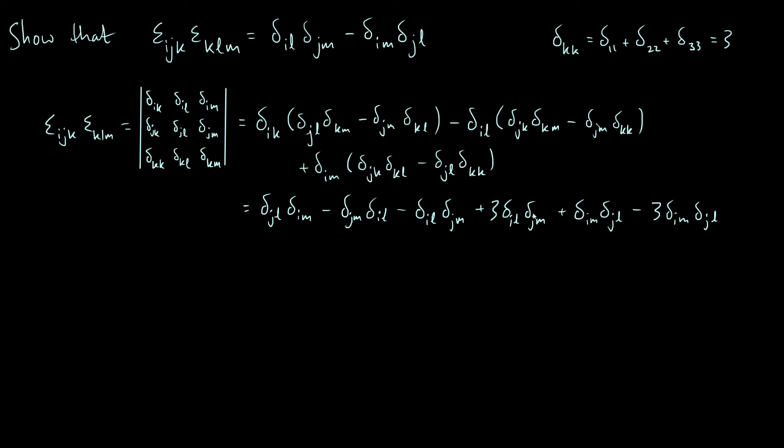So now let's just collect the terms together. So we've got a jl im term there, we have another one here, and we have another one there. And then the other terms, these remaining 3 terms are also of the same kind. We've got jm il, jm il, and jm il. So let's collect the like terms together. The single underlined ones, we've got one of them, then two of them, and then minus three of them. So minus one of them in total. So we've got minus delta_im delta_jl.